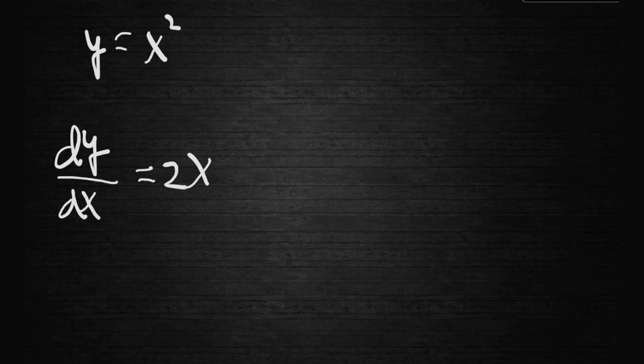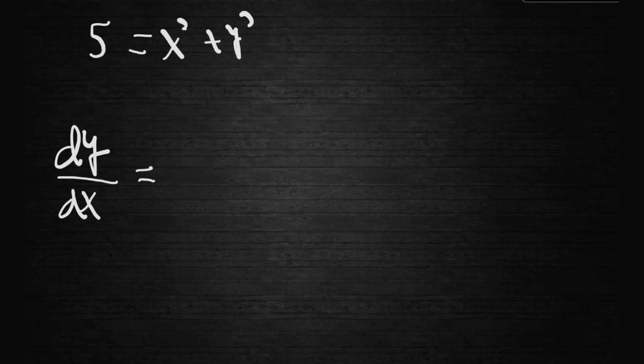However, let's say we have a different one where we have to use implicit differentiation. Let's say it is 5 equals x squared plus y squared. Using implicit differentiation, we get 0 equals 2x plus 2y times dy/dx. We solve for dy/dx, we would get that dy/dx is equal to negative x over y, using implicit differentiation.